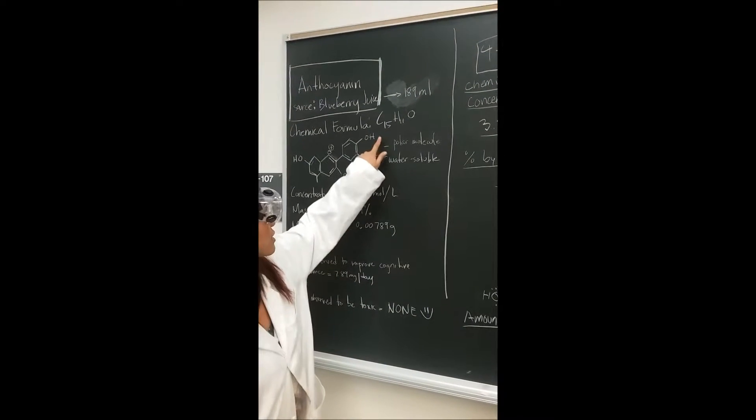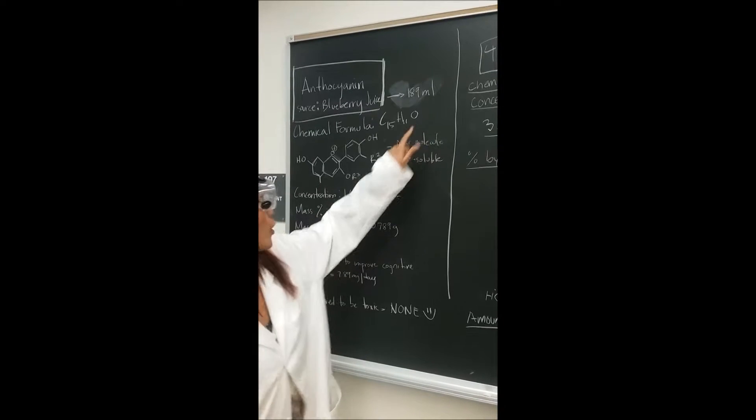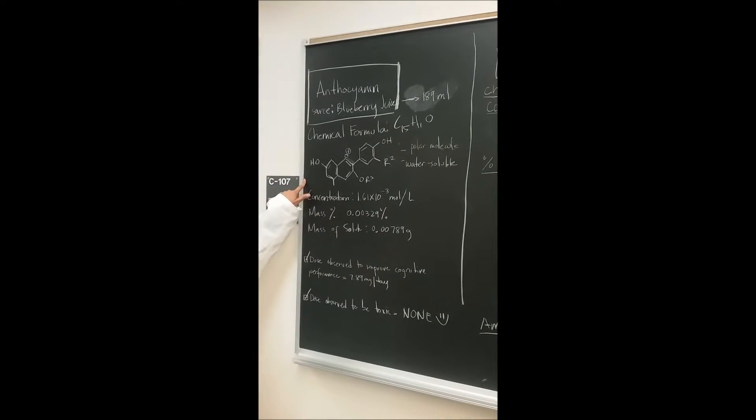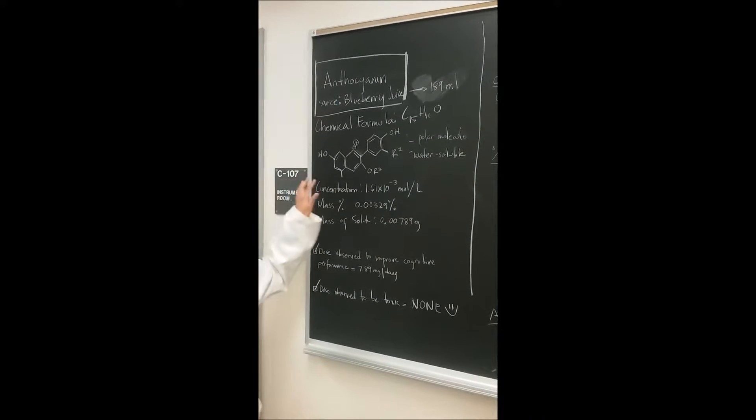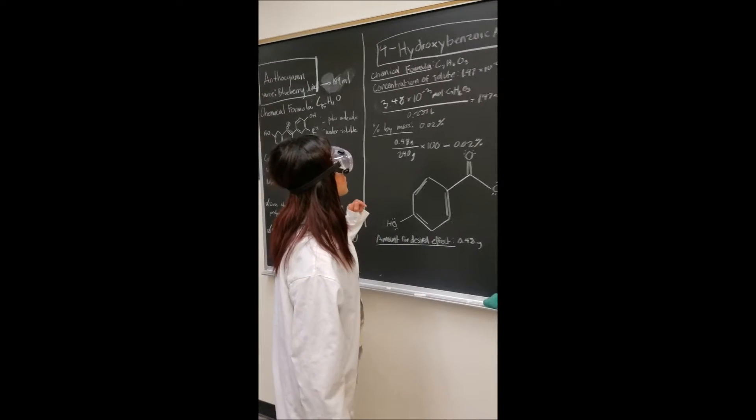The chemical formula for anthocyanin is C15H11O, and this is how the chemical structure is going to look.